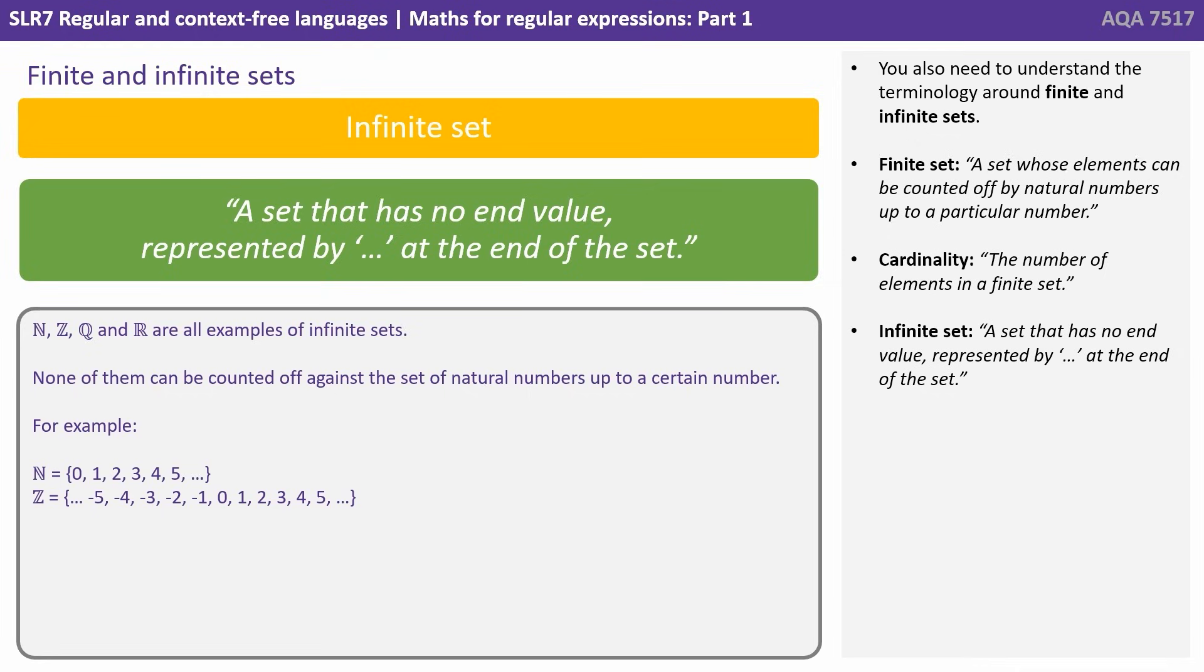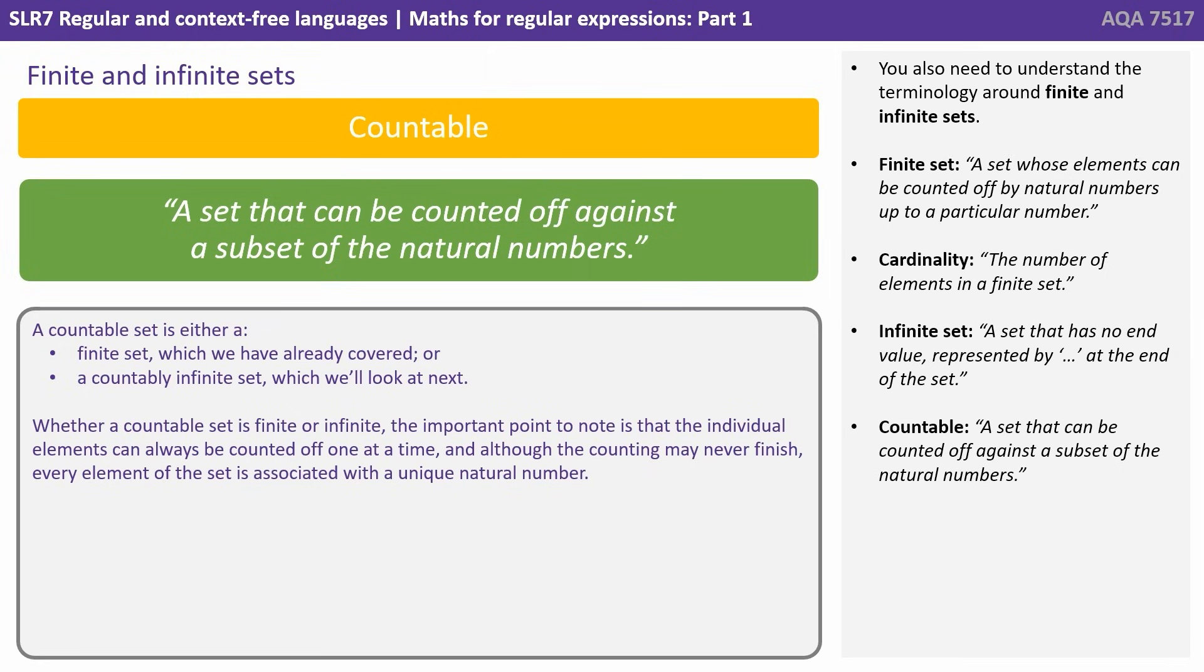An infinite set is a set that has no end value, and we represent this by the three dots at the end of the set. We also have the idea of a countable set. That's a set that can be counted off against a subset of the natural numbers. A countable set is therefore either a finite set, which we've already covered, or a countably infinite set, which we're going to look at next.